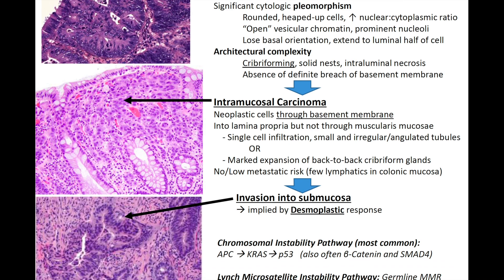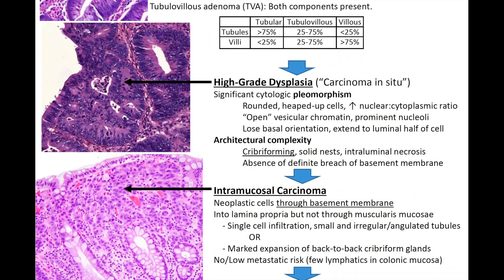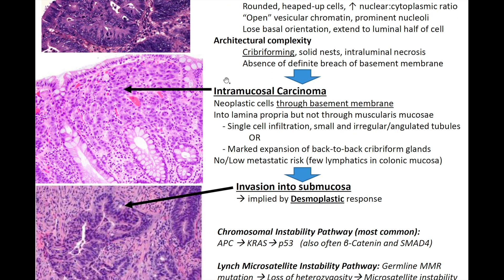If you do have neoplastic cells through the basement membrane, that is known as intramucosal carcinoma — when neoplastic cells breach through the basement membrane and into the lamina propria, but not through the muscularis mucosa. It can be single cell infiltration, small and irregular or angulated tubules, or marked expansion of back-to-back cribriforming glands. There is no or low metastatic risk in intramucosal carcinoma because the lymphatics and vessels are in the submucosa — if it's just in the mucosa, the malignant cells aren't going to be able to spread.